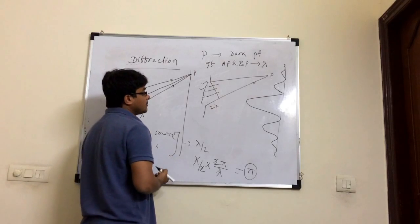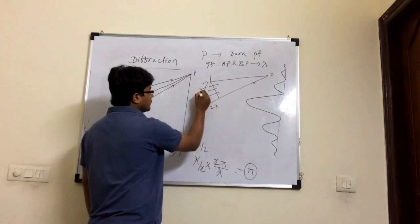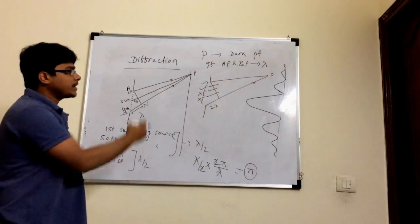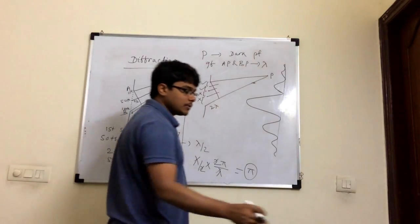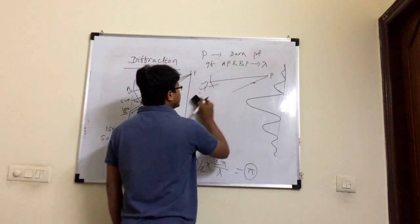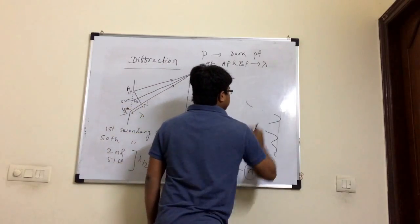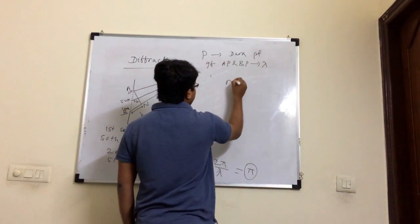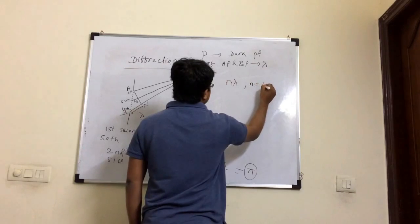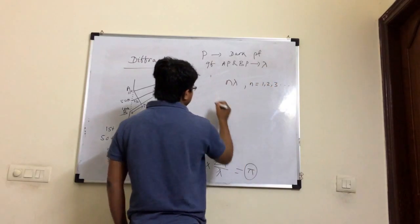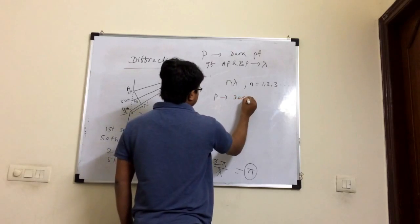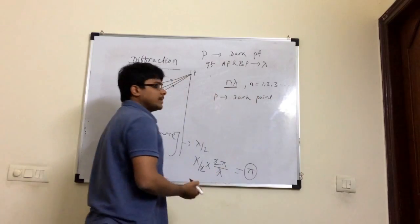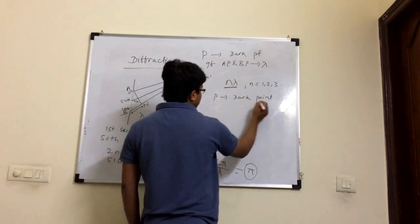For each section of sources, there is another set of secondary sources with a phase difference of pi, so they cancel. Again point P will be a dark point. Generalizing this: for a path difference of n·lambda, where n equals 1, 2, 3, the point P is a dark point.